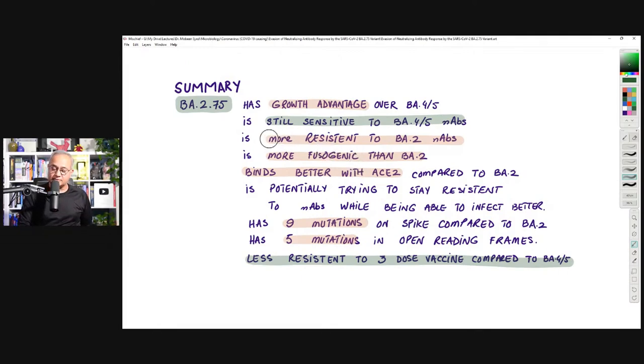That means if somebody got infected with BA.4 and 5, which is mostly recent variants, then getting reinfected by BA.2.75 is less possible. However, it is more resistant to neutralizing antibodies by BA.2. So if somebody was infected with BA.2, let's say January, February, March, in the US, even after some more months, then it is possible that they might get reinfected with BA.2.75.